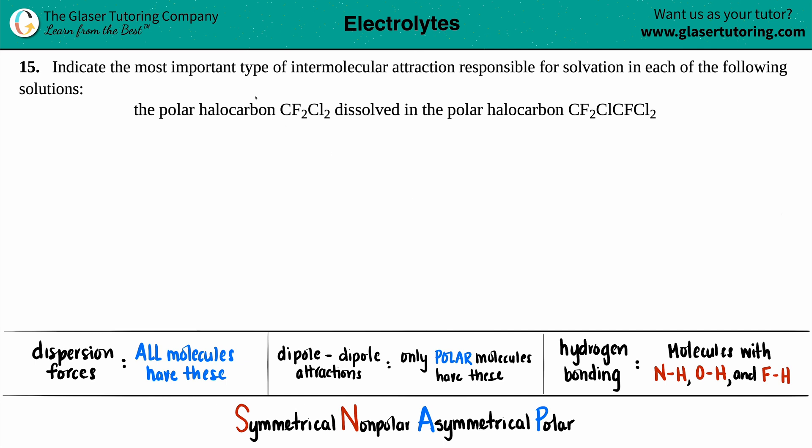Number 15, indicate the most important type of intermolecular attraction responsible for solvation in each of the following solutions. And then we have the polar halocarbon CF2Cl2, which is dissolved in the polar halocarbon CF2Cl, CFCl2.